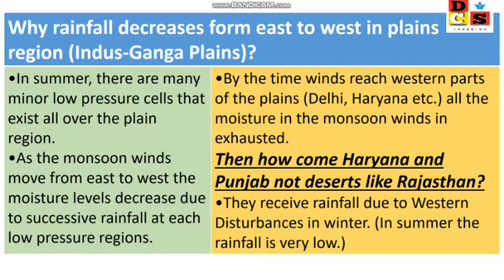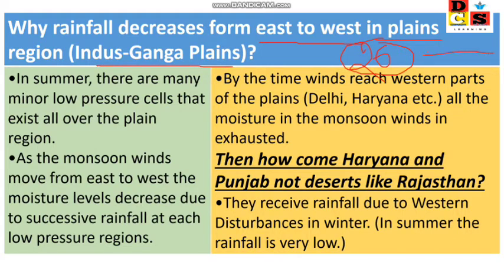Hello friends, welcome to DCS learning. In this video, we will discuss one important reason in geography, which is the 26th part of our Indian monsoon series. The question is: why does rainfall decrease in the west direction in the Indo-Gangetic plains when we go from east to west?